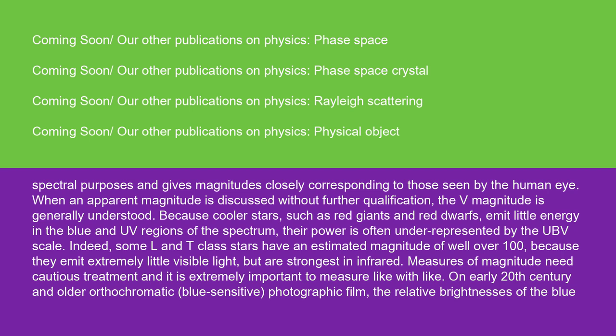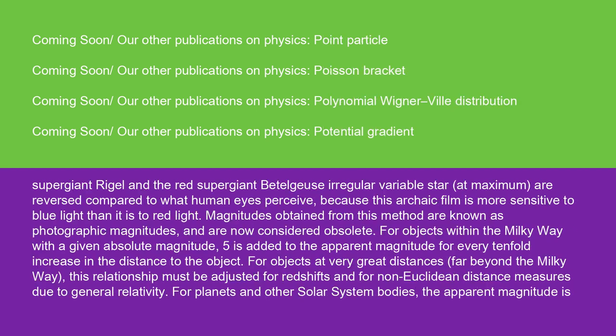On early 20th century and older orthochromatic, blue-sensitive photographic film, the relative brightnesses of the blue supergiant Rigel and the red supergiant Betelgeuse irregular variable star (at maximum) are reversed compared to what human eyes perceive because this archaic film is more sensitive to blue light than it is to red light. Magnitudes obtained from this method are known as photographic magnitudes and are now considered obsolete.